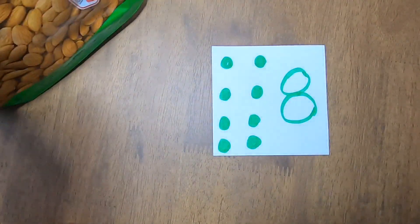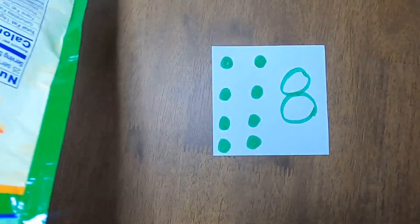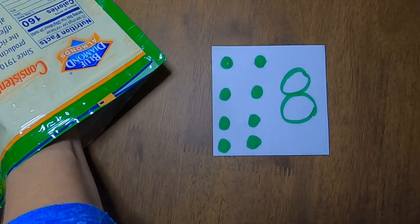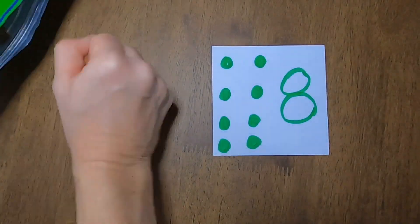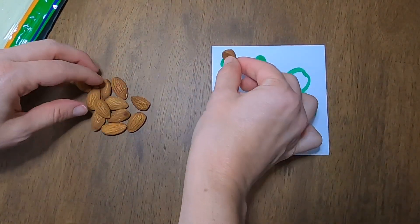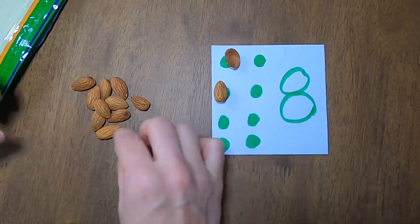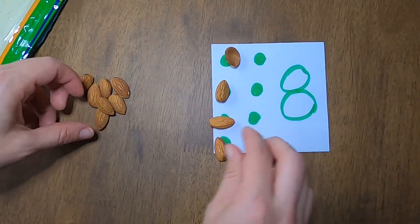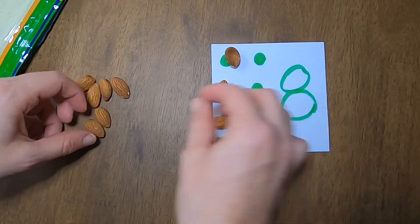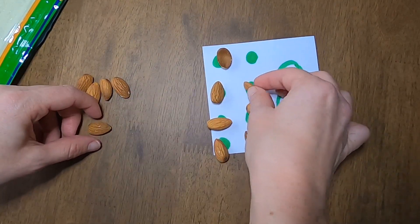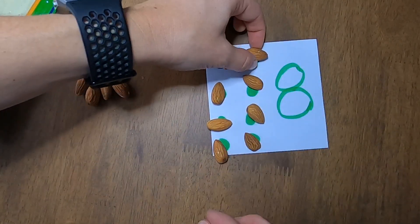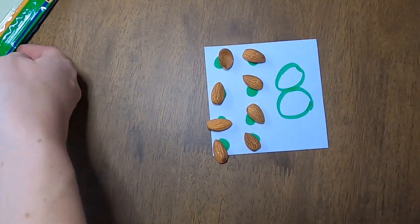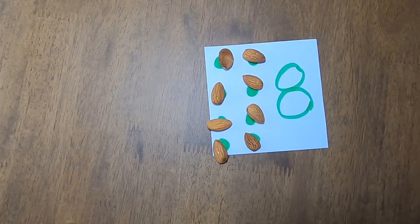So I'm going to use those for the number eight. So I picked the number eight card. Now I'm going to put almonds on here, so I'm going to count some almonds out, putting them on there. One, two, three, four, five, six, seven, eight. There we go, eight almonds. So that's how you're going to play the count and match game.